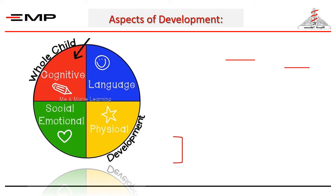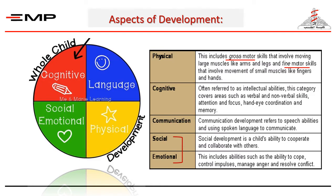There are four aspects of developmental skills that can be easily observed: the motor, the cognitive, the language, and the socio-emotional. The motor skills or physical skills include gross motor skills that involve moving large muscles of the body and fine motor skills, which involve movement of the small muscles of the hand. Cognitive skills cover attention, memory, and other intellectual abilities. Language or communication skills refer to speech abilities. Socio-emotional skills include the ability to cooperate with others and to control impulses and resolve conflicts.